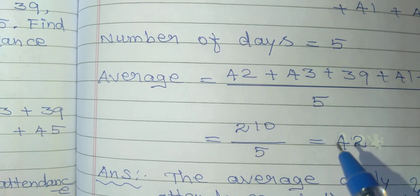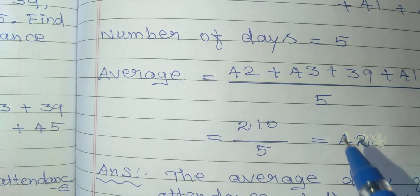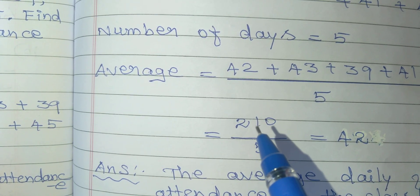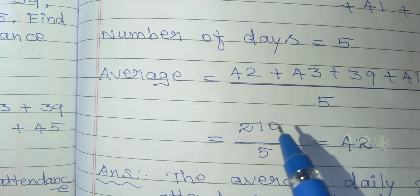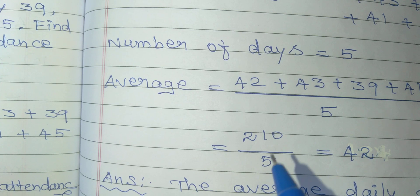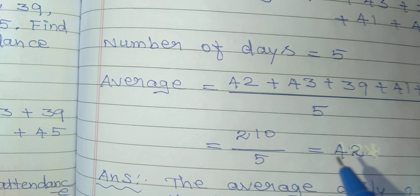5 times 4 is 20. I write 4. Remaining 1. Bring down 0 to make 10. How many times does 5 go into 10? 2 times. The answer is 42.